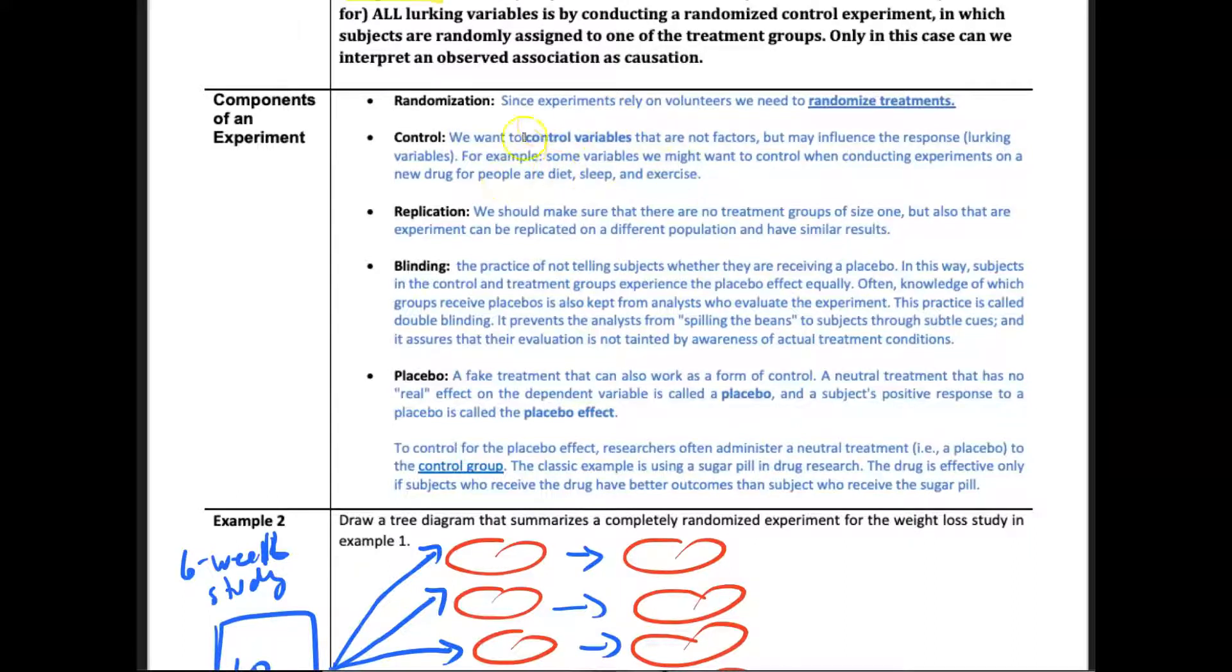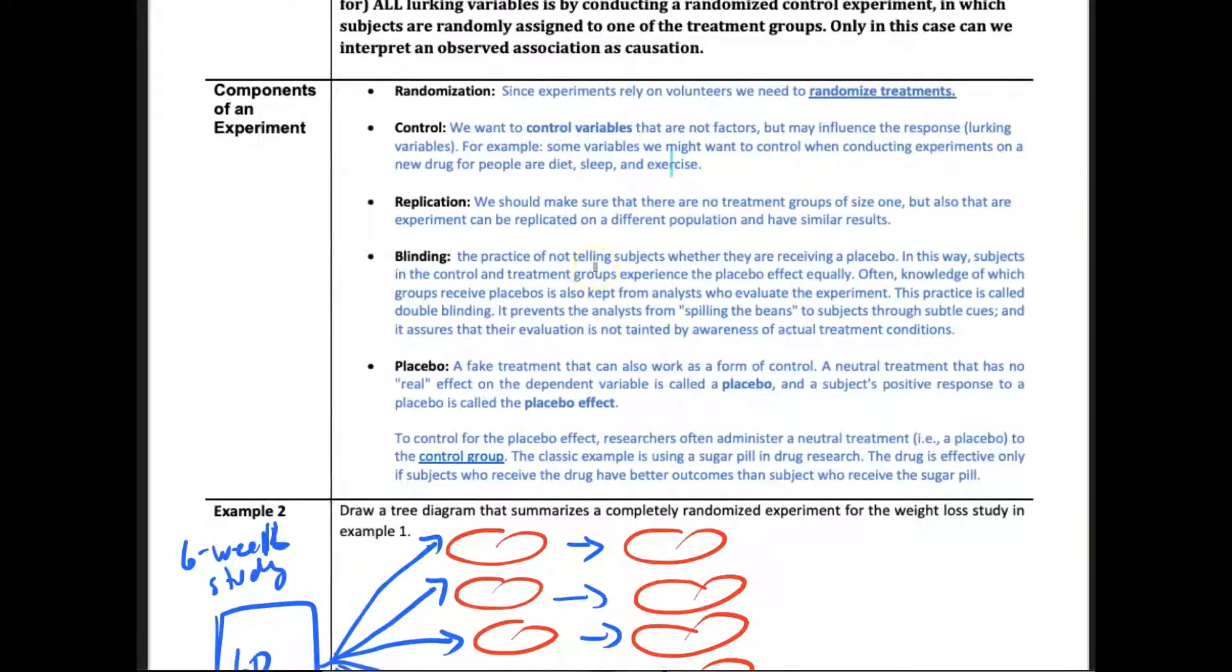Then you have to have control variables. You want to control variables that are not factors. You can see the example here. A good example stated here: some variables we might want to control when conducting experiments on a new drug are their diet, sleep, and exercise. You want to study people where we've controlled, meaning the people who have the same diet, sleep the same amount, and exercise the same way. That's called control so that you can actually study the relationships or the results.